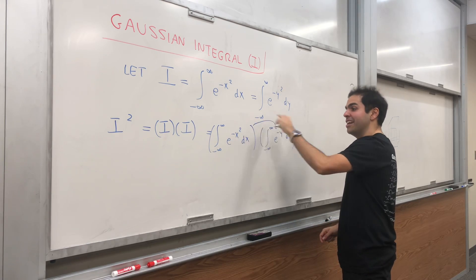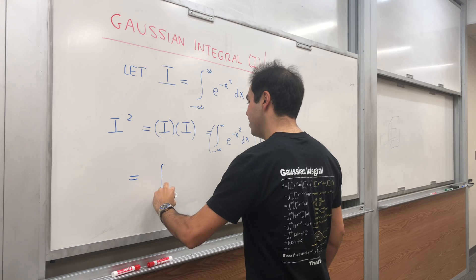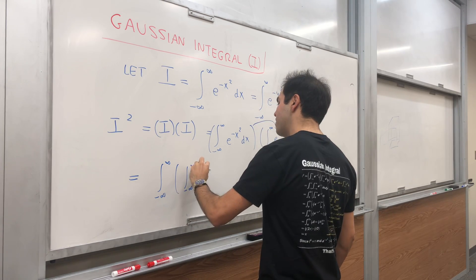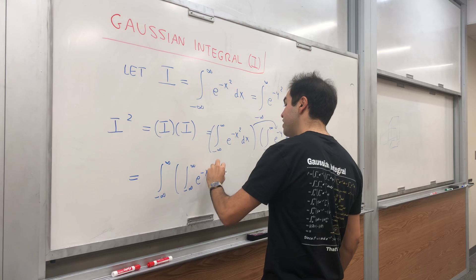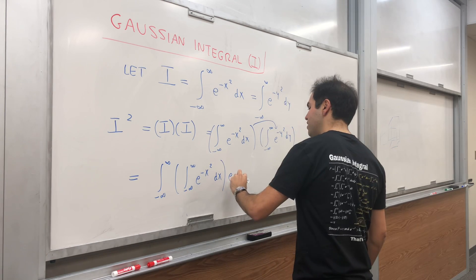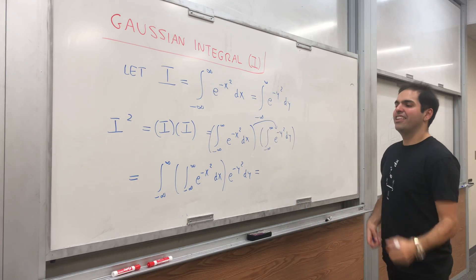So let's put this constant inside the second integral and we get the integral from negative infinity to infinity, integral from negative infinity to infinity, e^(-x²) dx times e^(-y²) dy.